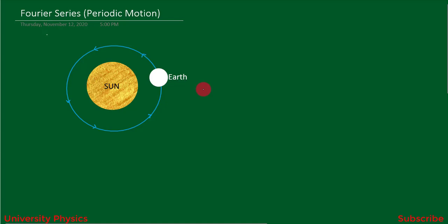For example, related to our daily life, a week is an example of a periodic function. Any week has seven days: Monday, Tuesday, Wednesday, Thursday, Friday, Saturday, and Sunday. If the month of March starts on Monday, then March 1st is Monday, 2nd is Tuesday, 3rd is Wednesday, 4th is Thursday, 5th is Friday, 6th is Saturday, and 7th is Sunday.